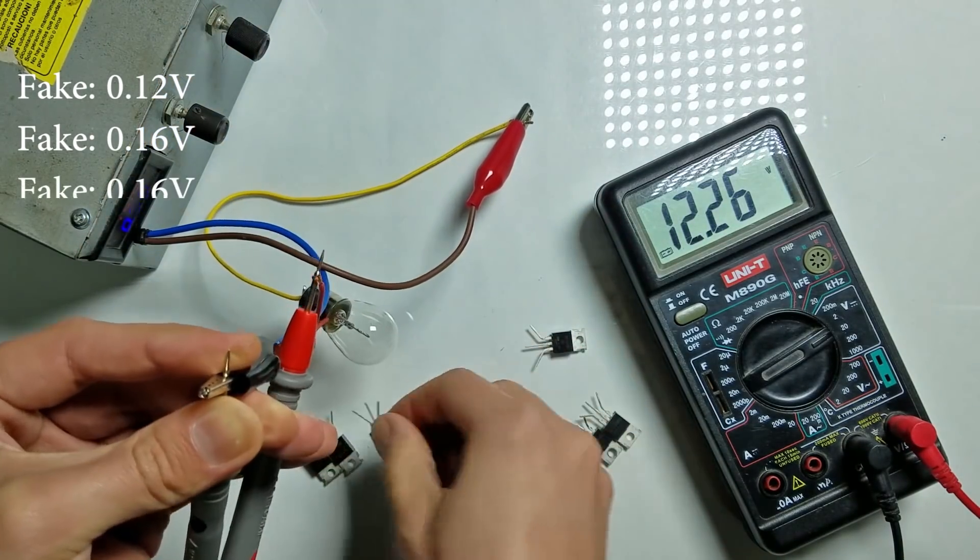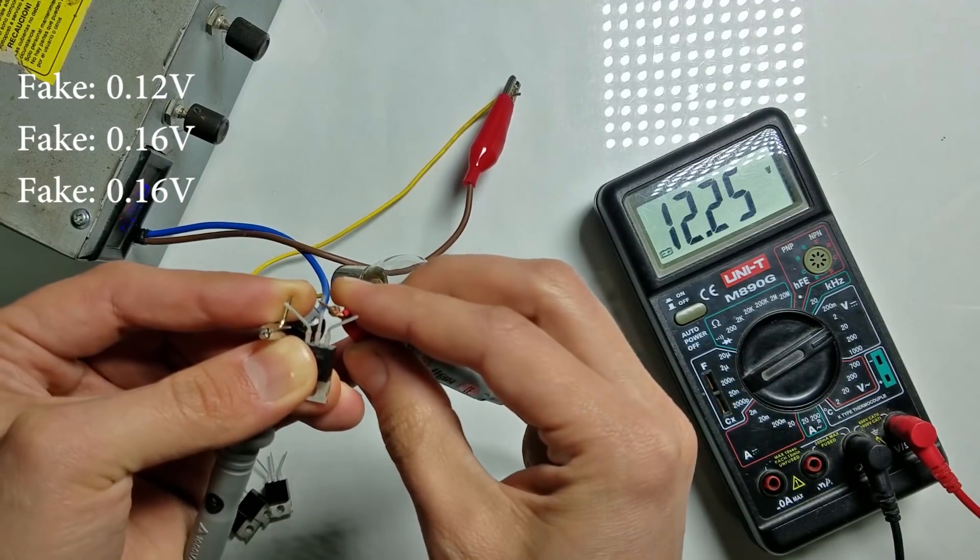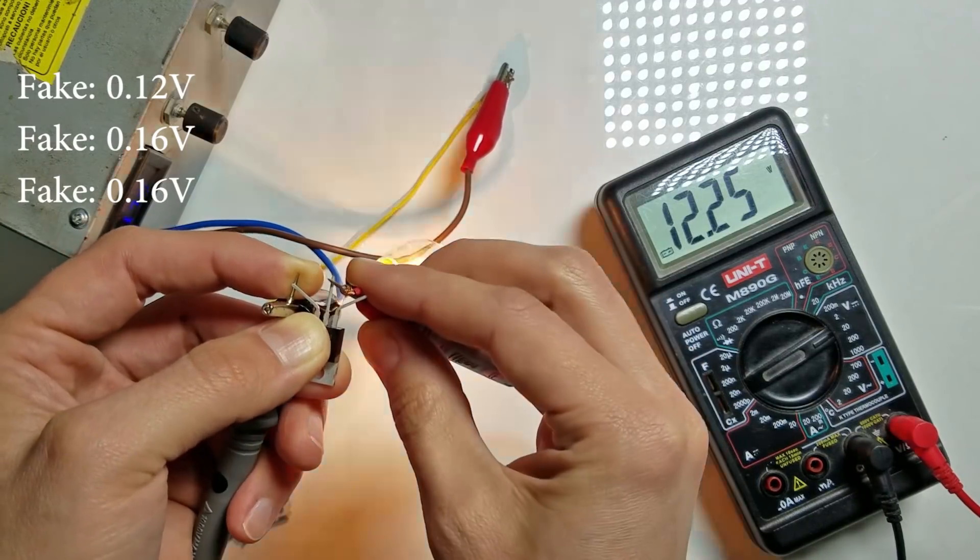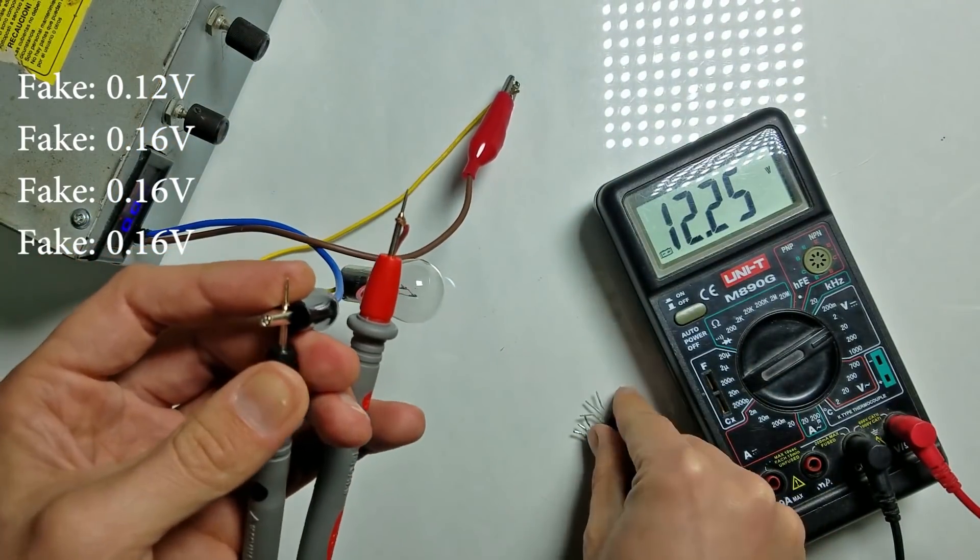And here we have 0.16V as well. And the last fake MOSFET. We have 0.16V here as well.